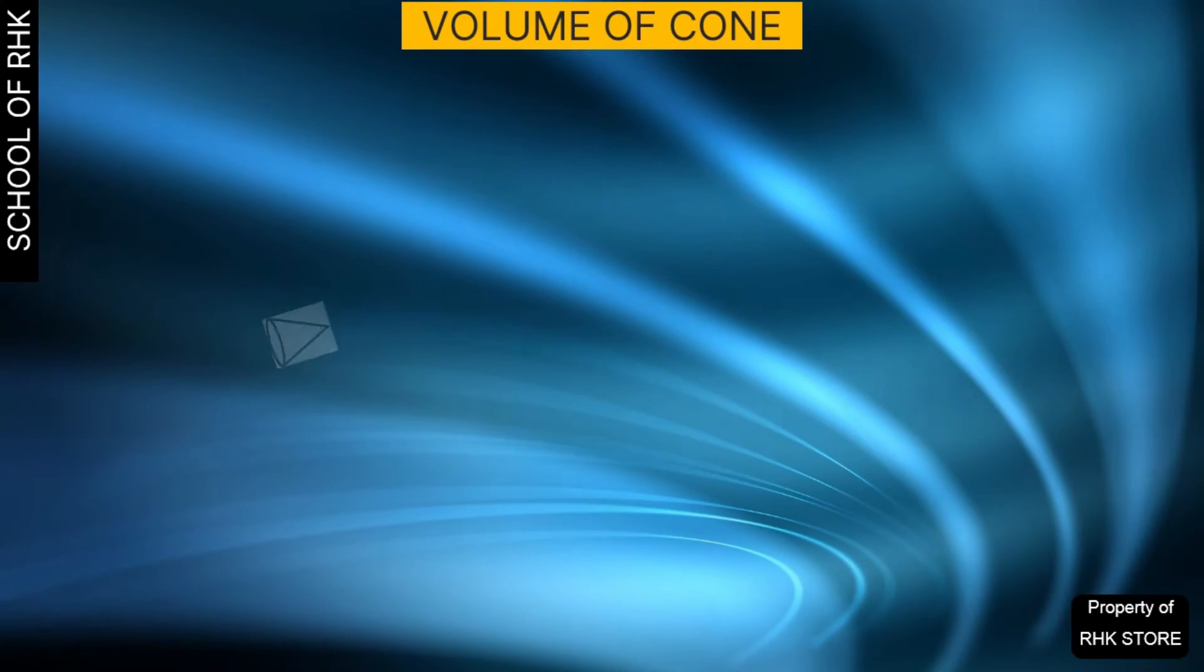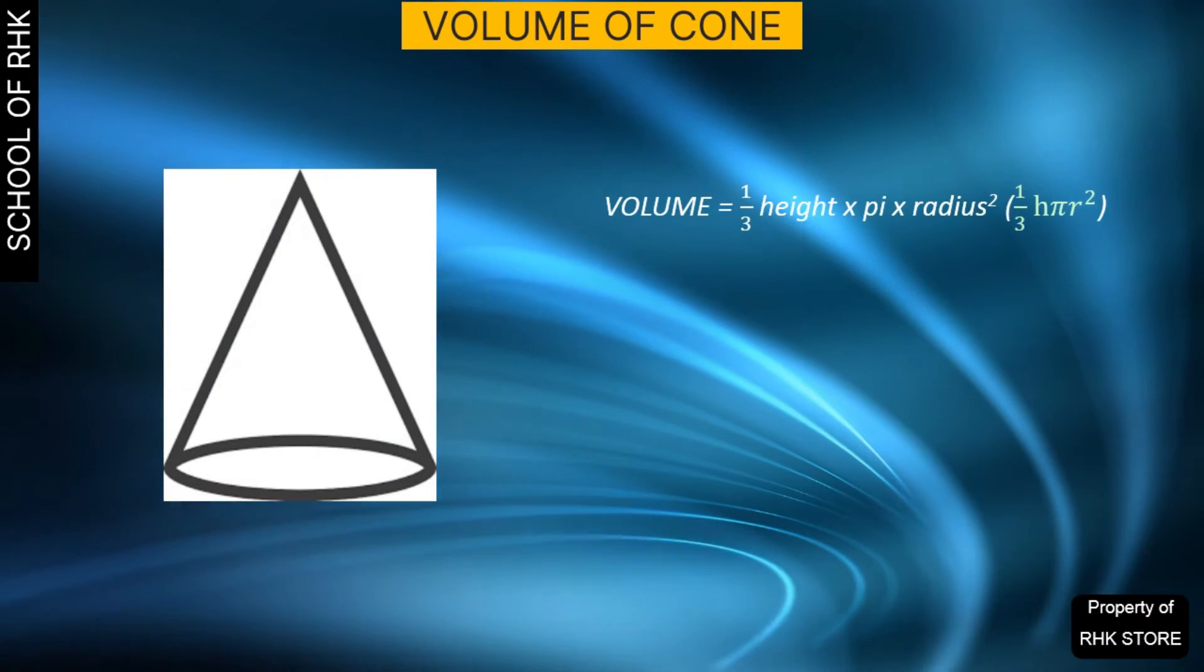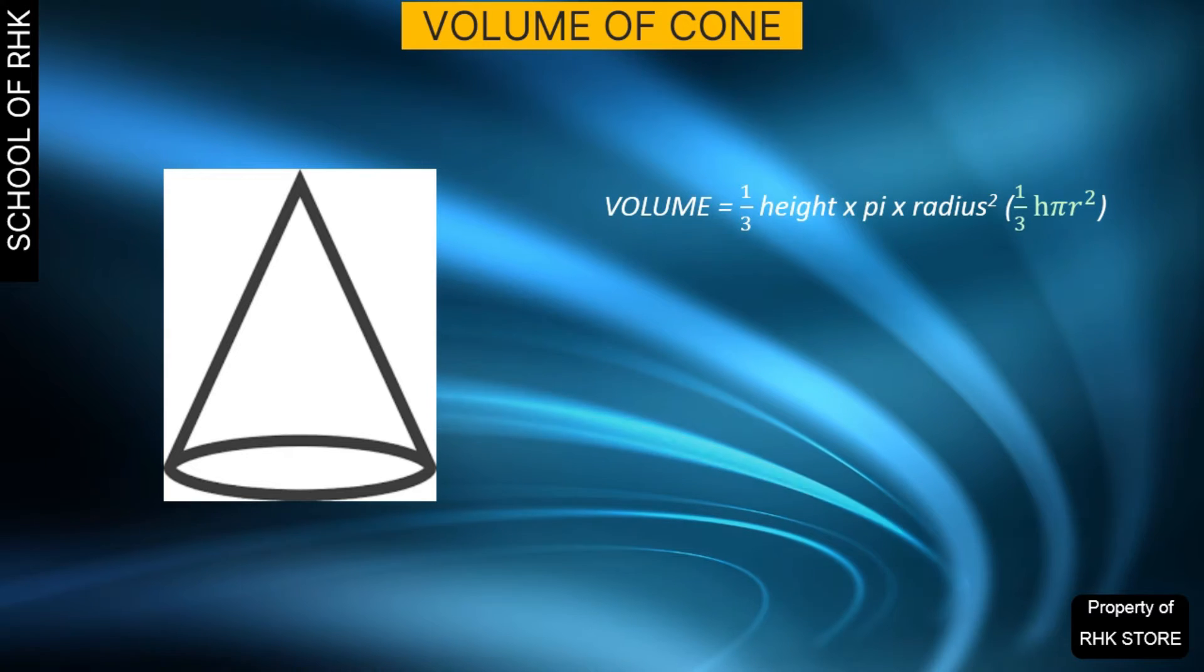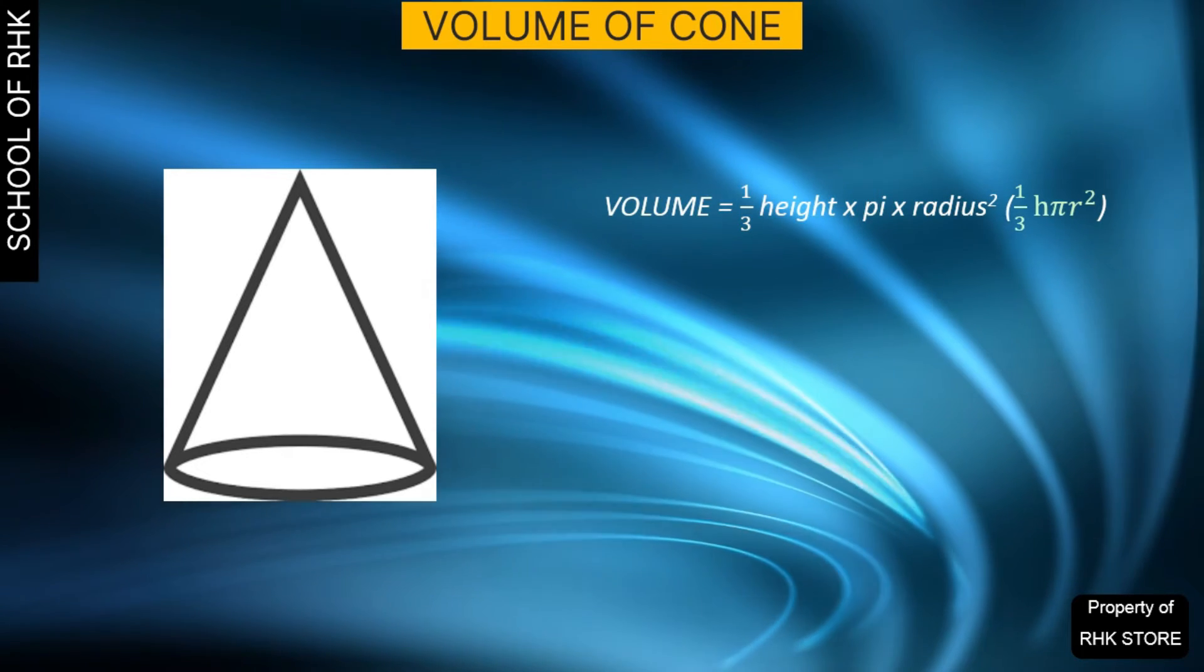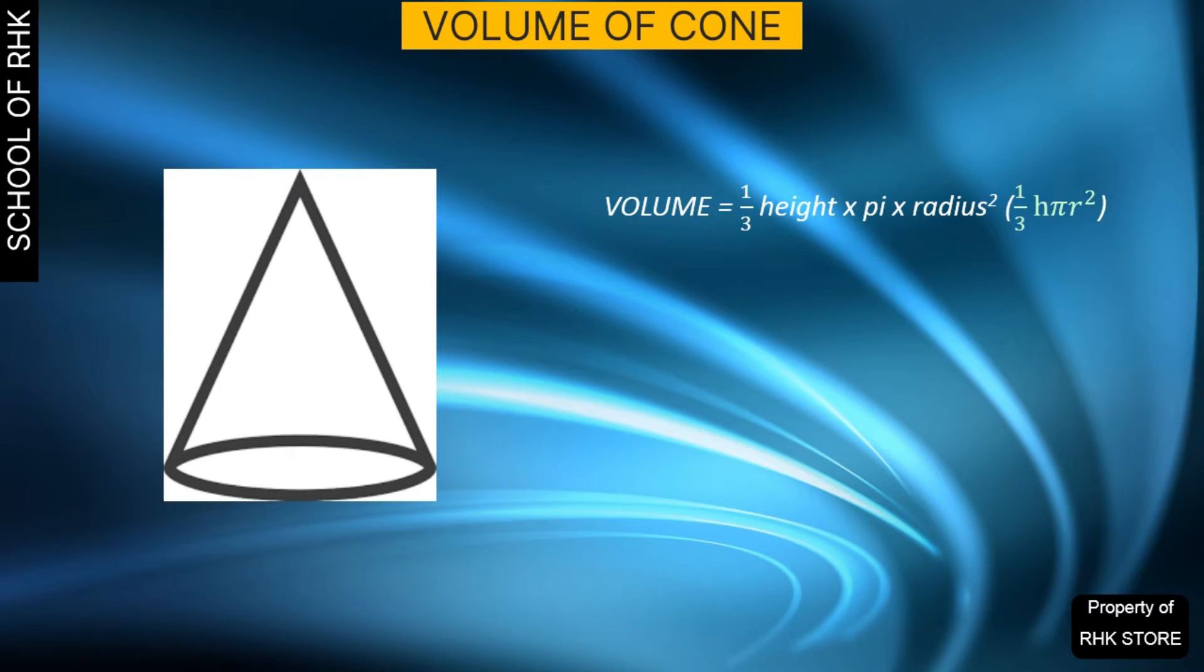The volume of a cone equals one-third times height times pi times radius squared. To use our formula to find the volume of a cone, we need to know two dimensional properties: the radius of the circle that forms the base